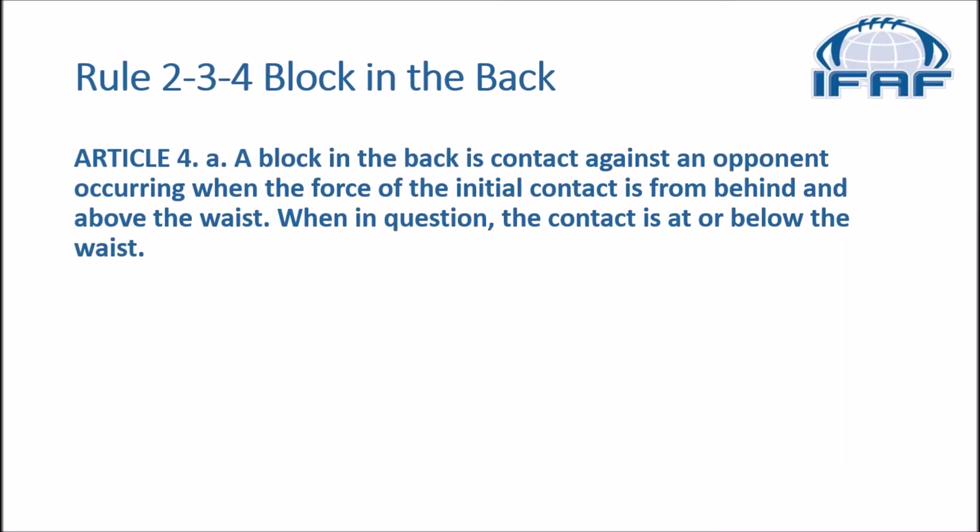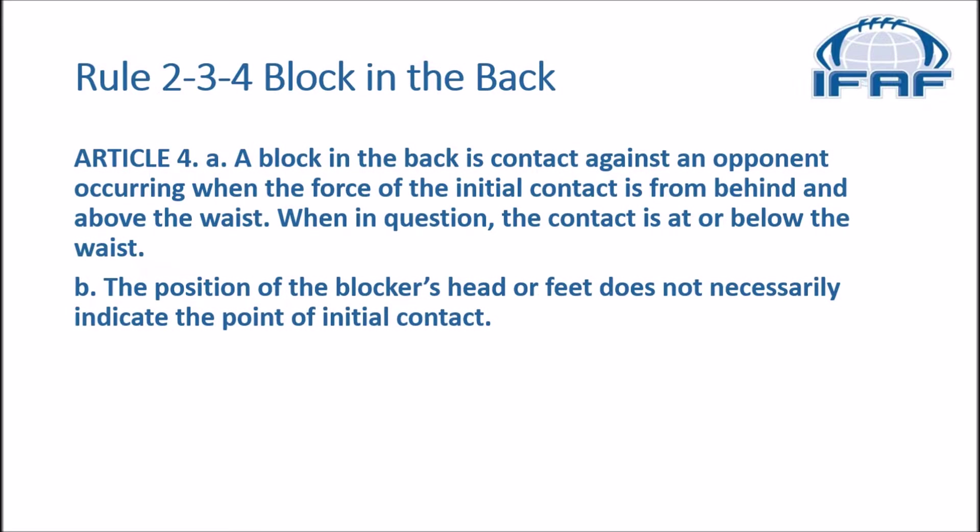In the rule book, rule 234 on block in the back, article 4A says: a block in the back is contact against an opponent occurring when the force of the initial contact is from behind and above the waist; when in question, the contact is at or below the waist. The position of the blocker's head or feet does not necessarily indicate the point of initial contact.